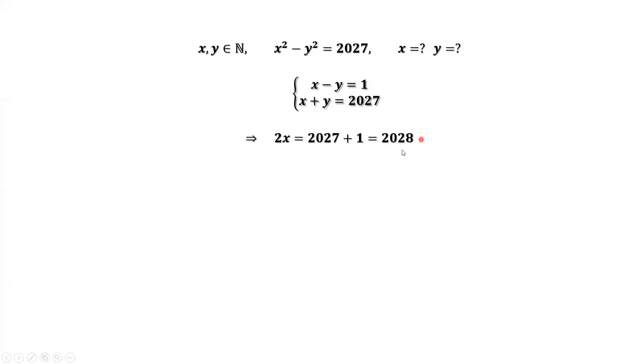Solve this equation for x. x equals 1014. Plug in x equals 1014 back to the first equation. You can find y equals 1014 minus 1, which is 1013.